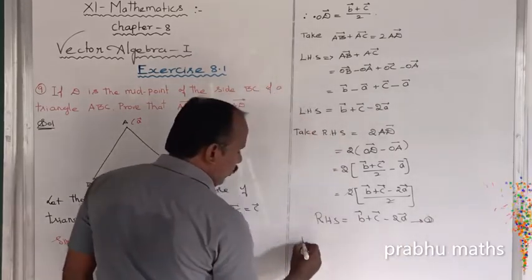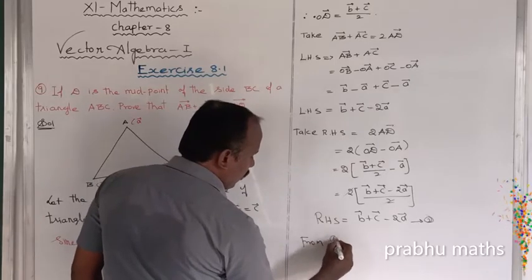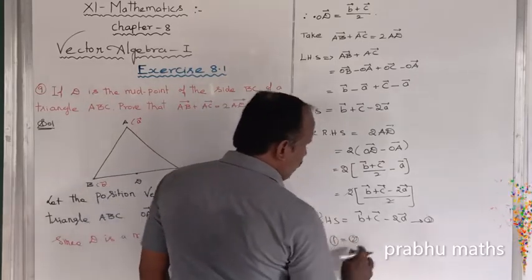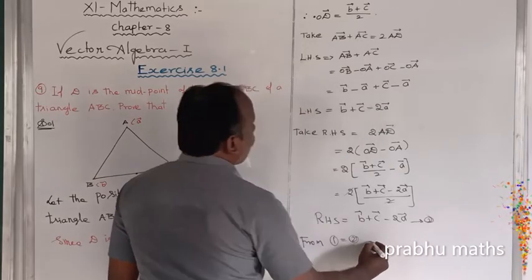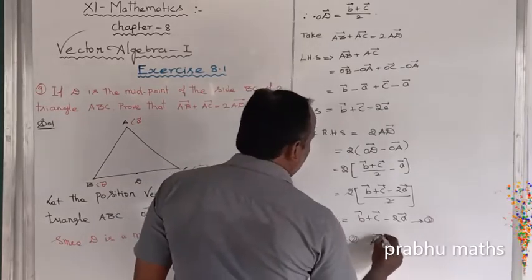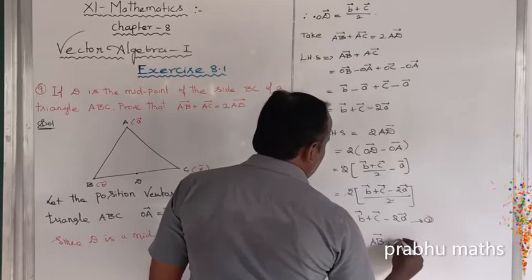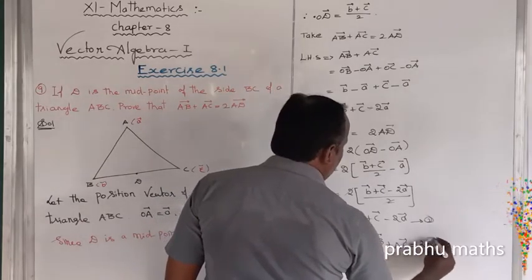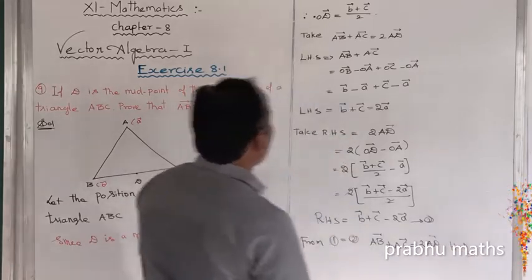From equation 1 equals equation 2, therefore AB vector plus AC vector equals 2 times of AD vector. Hence the theorem is proved.